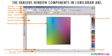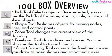Now let's go to the toolbox overview. Looking at the various window components in CorelDRAW, you will see the toolbox. We'll highlight them one after the other and talk about them. The first one is the Pick tool, used to select and move objects. The next one is the Shape tool, used to reshape objects — for example, reshaping a square.